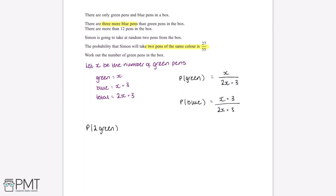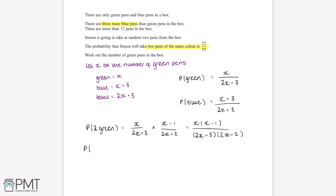To find the probability of choosing two green pens, we multiply the individual probabilities together. The probability of the first green pen is x over 2x plus 3. After removing one green pen, the remaining green pens are x minus 1 and the total pens become 2x plus 2. Multiplying these gives x(x minus 1) divided by (2x plus 3)(2x plus 2).